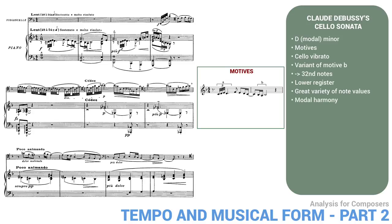The harmony for these last two bars has been modal, turning around a G major chord, which is really from the Dorian mode on D. When the cello has gone all the way down to the open G string, it changes direction, rising up and passing through the characteristic B natural of the Dorian mode at the end of bar 5. Then the tempo is marked CEDE — hold back.